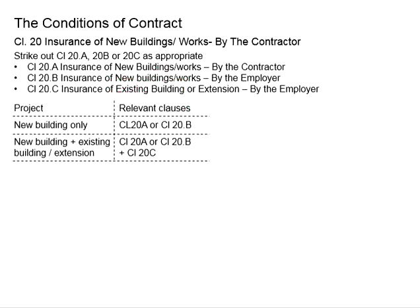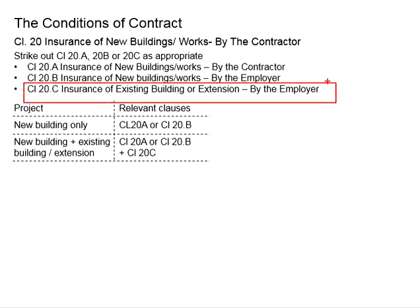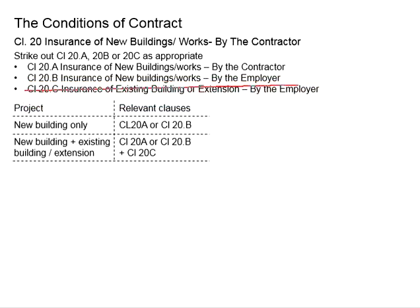Clause 20C is subject to the existence of an existing building. If the project is fully related to new buildings or works and there is no existing building within the site, Clause 20C will not be necessary and may be struck out. For better illustration, let us look at a table.